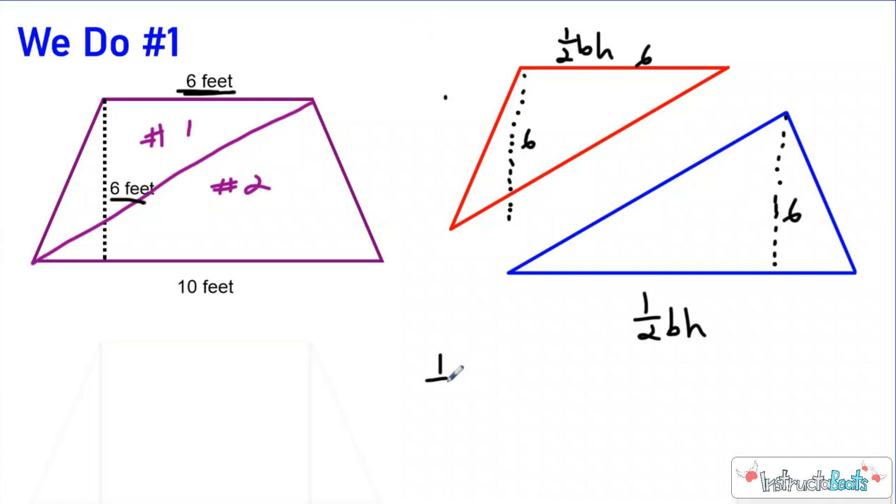So if I come down here and do some math, 1 half of 6 times 6, that'd be 36. So 1 half of 36 equals 18. So this area is 18 feet squared.